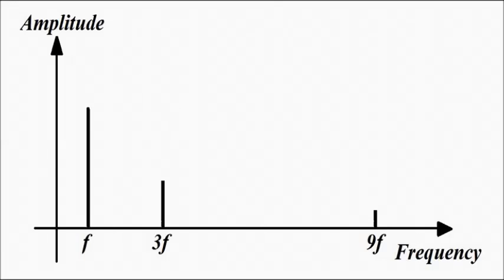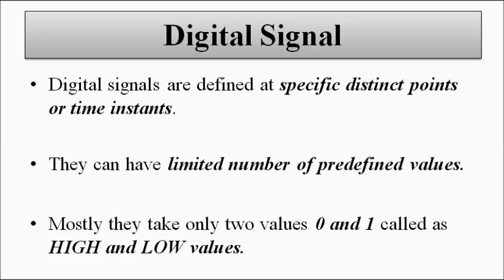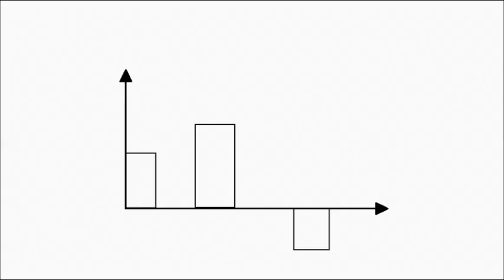Now let us quickly discuss digital signals. Digital signals are converted from analog signals through the process of sampling, quantization, and encoding. They are defined between specific distinct points and have fixed, predefined voltage levels. In data communication, the two-bit format is used — zeros and ones — because data is transmitted as a series of zeros and ones, where zero is defined by one voltage level and one is defined by another. A digital signal looks something like this.